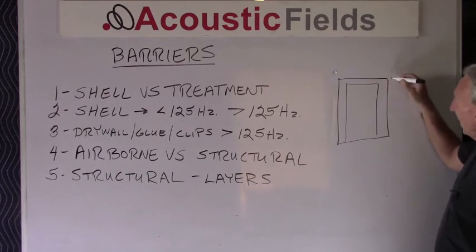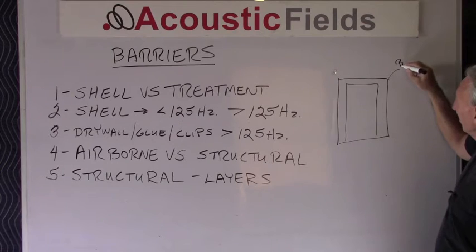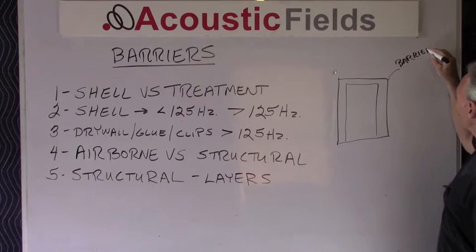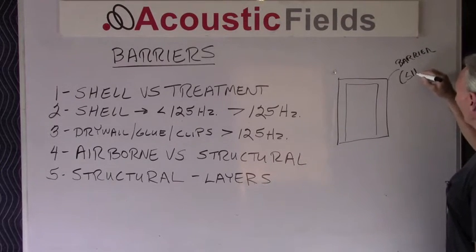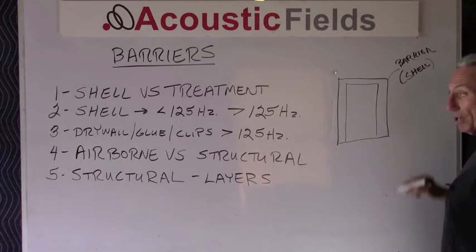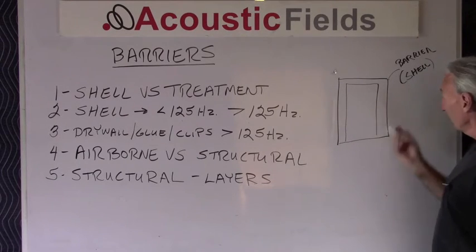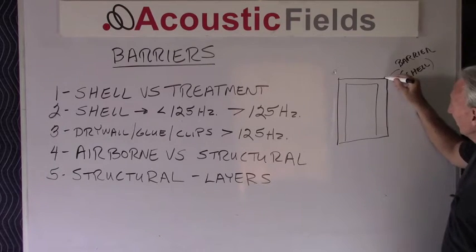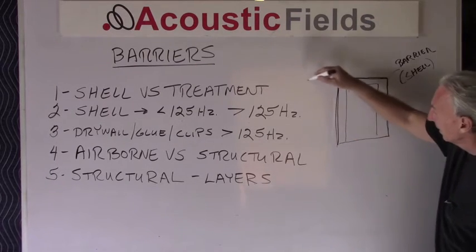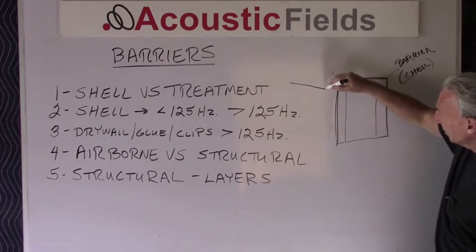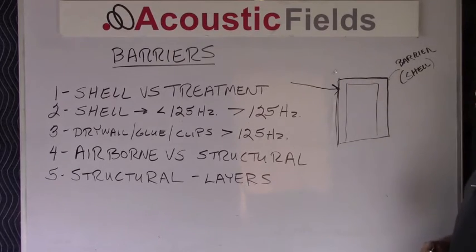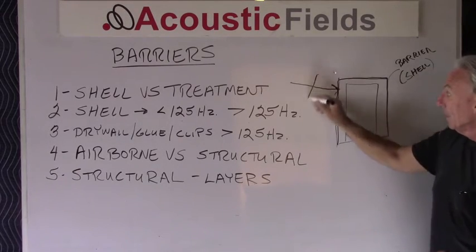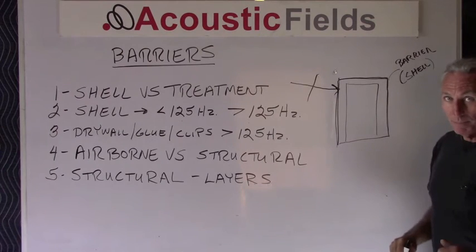This outside layer is called the barrier. Another term for it is a shell — in acoustics, a lot of engineers call it the shell. So barrier technology is the shell of our room. Now what does the shell of our room do? Extraneous noise that tries to get in our room — hopefully the shell is designed well enough that it keeps that noise to a minimum.